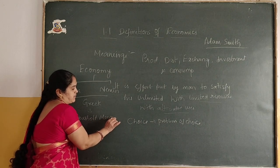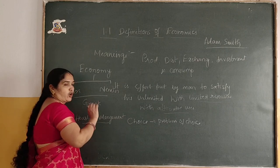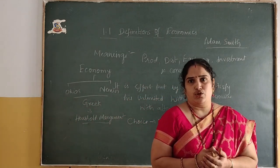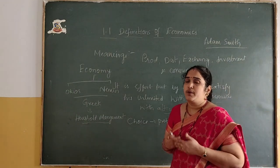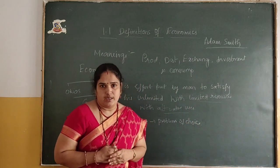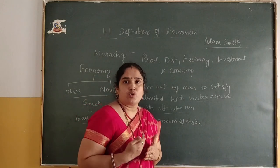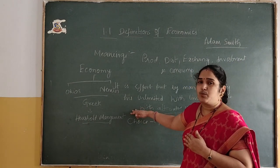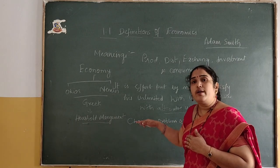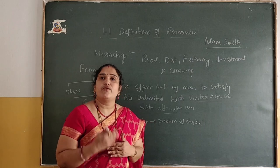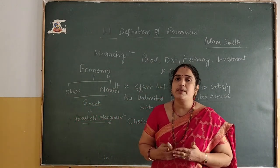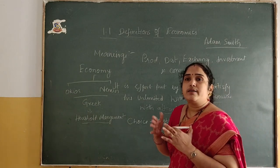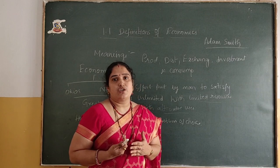Household management means how to manage our economy with available resources. Resources are scarce, so when there are scarce resources, we need to make a choice — because we cannot satisfy all our unlimited wants, we have to compare wants and decide which one to satisfy first. This creates the problem of choice. Adam Smith in his book gave the prescribed definition of economics, and other economists also gave their views, defining economics in different ways. We will see how economics has a nature and scope along with the definitions of these economists.